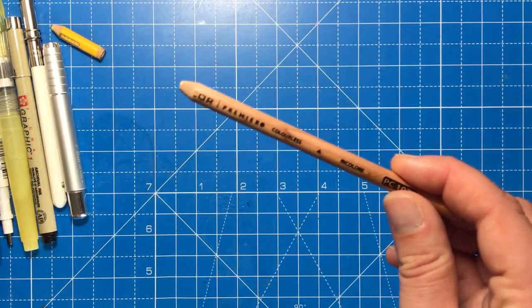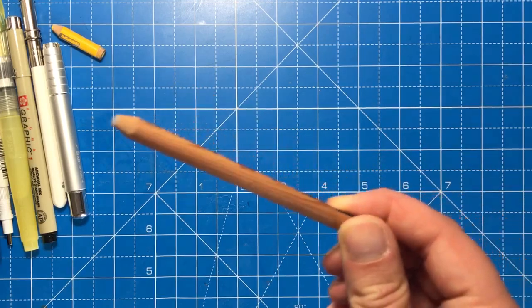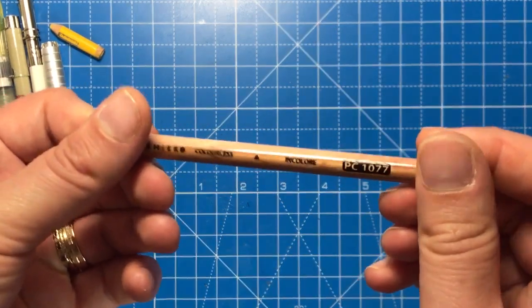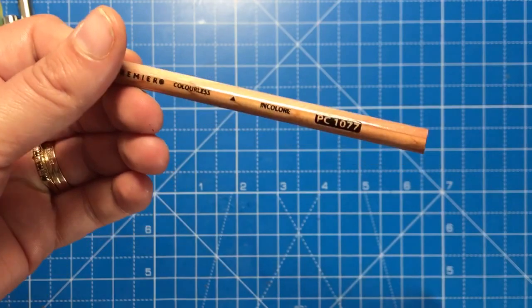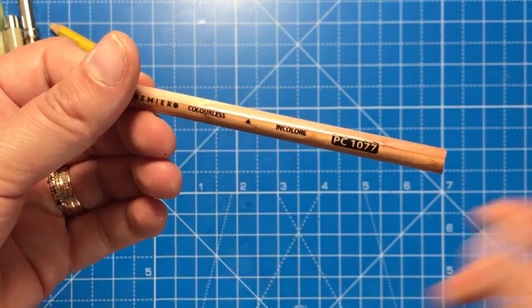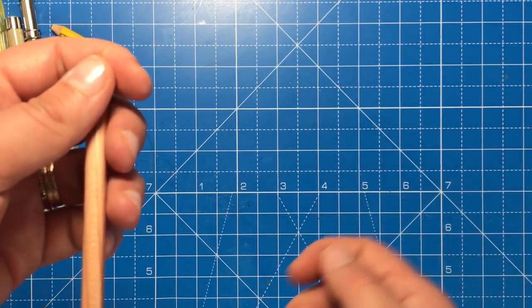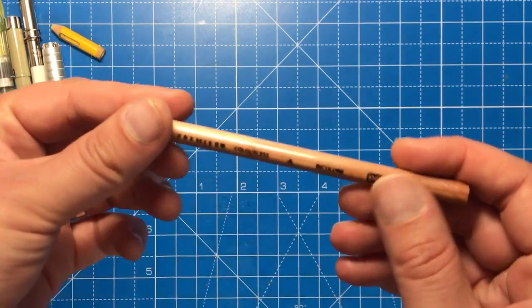The next thing is a blender pencil. These are absolutely incredible for flattening out your colour. You know when you colour with coloured pencils and you get those streaks and those lines and it just doesn't look smooth at all?